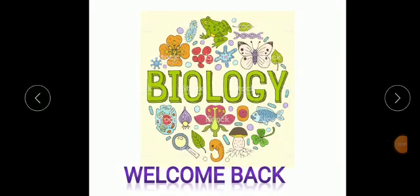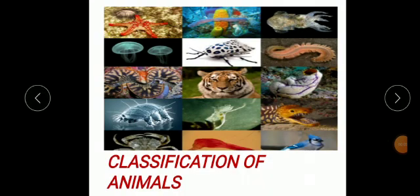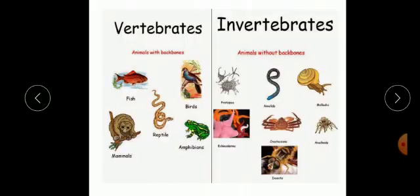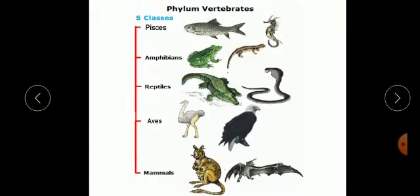Welcome back to biology class. We are discussing the classification of animals. In our previous class, we discussed that the animal kingdom is classified on the basis of absence or presence of backbone. Animals with backbones are called vertebrates, while animals without backbones are called invertebrates. We also learned that vertebrates are further divided into five classes: Pisces, Amphibians, Reptiles, Aves, and Mammals. We will discuss them one by one.